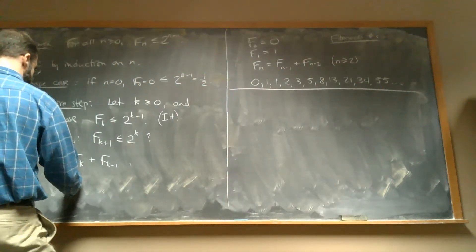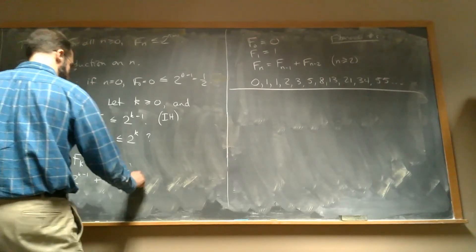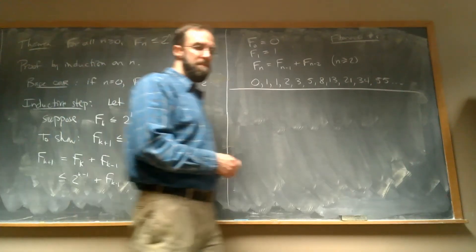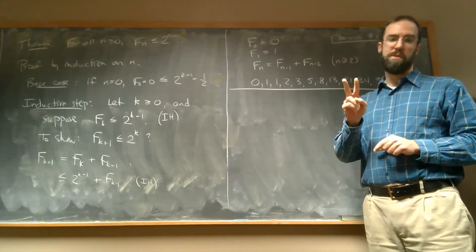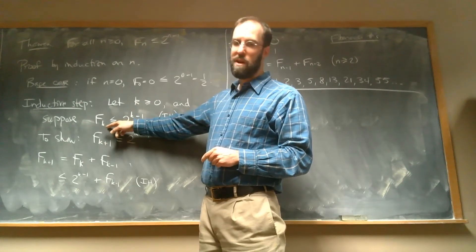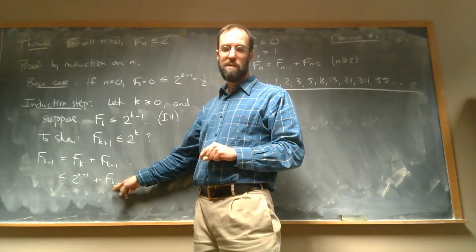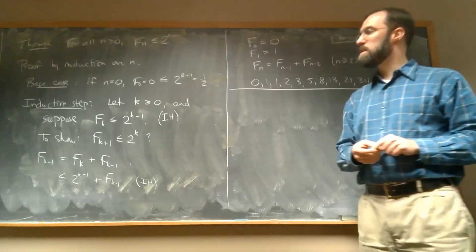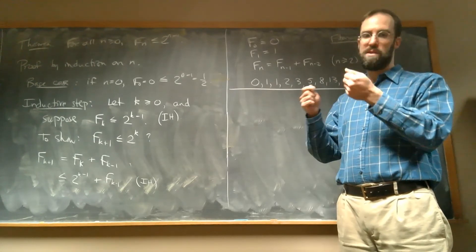Our induction hypothesis says F(k) ≤ 2^(k−1), so we can say this is less than or equal to 2^(k−1) plus F(k−1). Now we're stuck. There are actually two things wrong. The first, more obvious problem: since we only assumed something about F(k), we don't know anything about F(k−1). Just knowing something about the one previous value wasn't enough — we need to know about the two previous values.